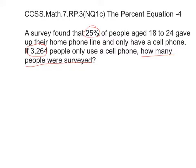Let's pull out the math. Do we need 18 to 24? Not really, so let's just cross it out. The total amount of people that use cell phones is 3,264. We know that this is 25%, but we don't know what the total is. So we're going to say that is X.